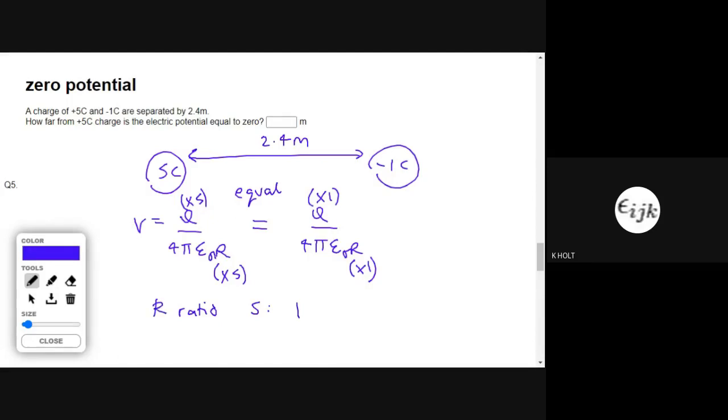So I share 2.4 meters in that ratio, and that gives me two meters to 0.4 meters. So the separation from the five Coulombs is two meters.